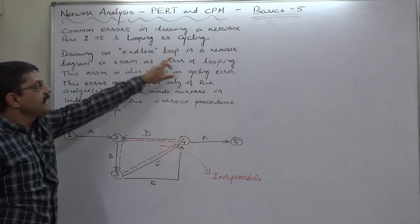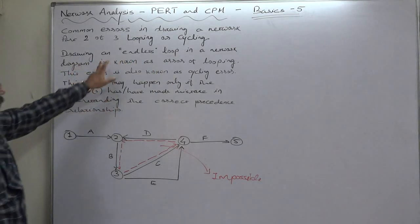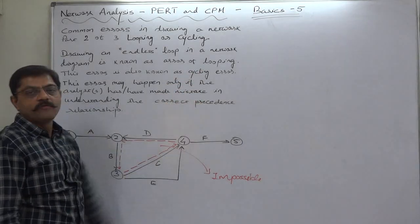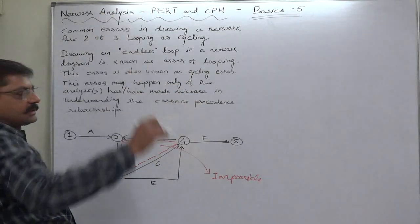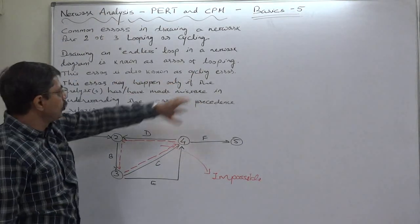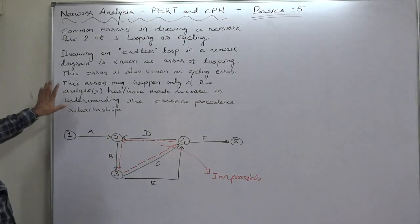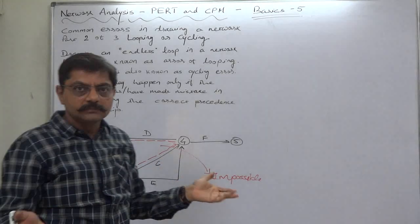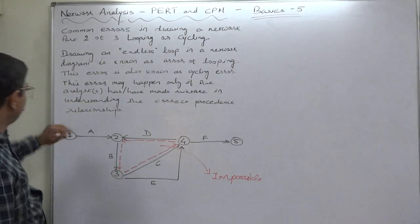Drawing an endless loop in a network diagram is known as error of looping. This error is also known as cycling error. Now how can this kind of error take place?